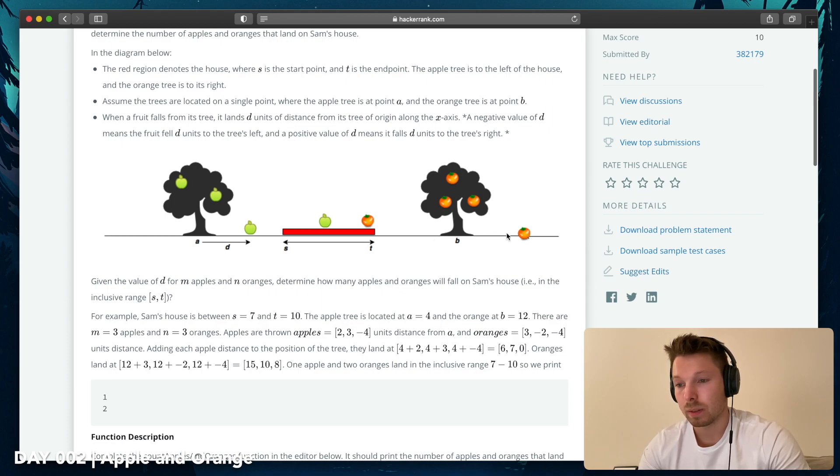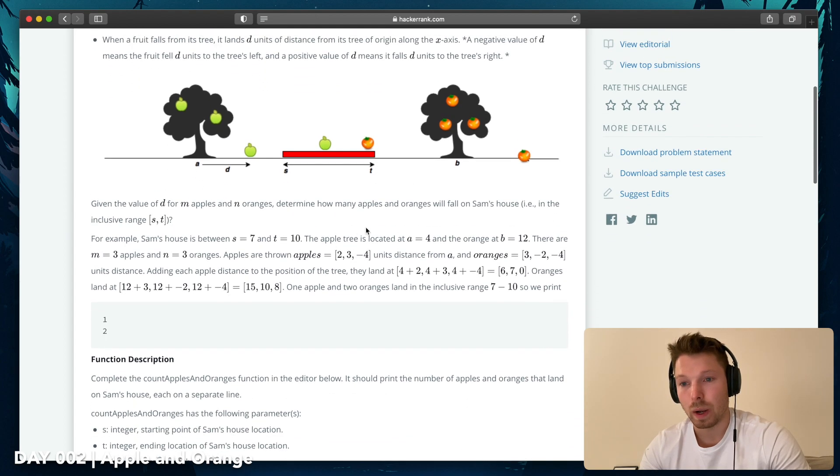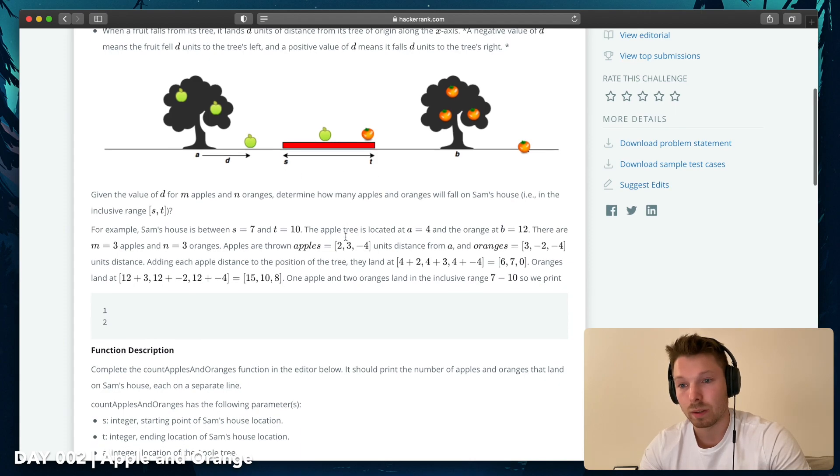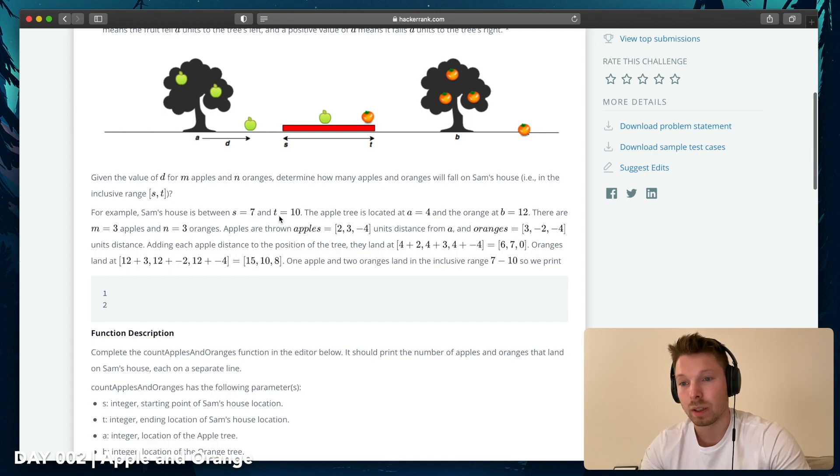Okay, so X axis plus and minus from B or A. Given the value of D for M apples and N oranges, determine how many apples and oranges will fall on Sam's house, in the inclusive range ST. Alright, since we know the distance and we should know the point here, plus for apple and minus for orange, I guess. So for example, Sam's house is between S7 and T10.